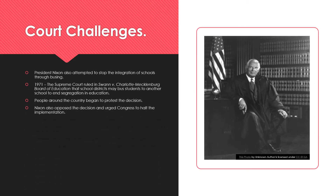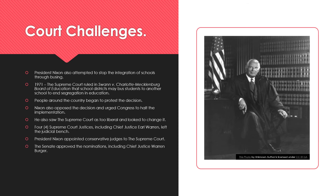President Nixon also attempted to stop the integration of schools through busing. Busing involved taking African American children from schools that were failing or not doing well and bringing them to other schools in other locations, both in Northern and Southern states. Nixon wanted to stop that. In 1971, the Supreme Court ruled in Swann v. Charlotte-Mecklenburg Board of Education that school districts may bus students to another school to end segregation in education. Many people were not happy with this and began to protest the decision. Nixon himself also opposed the decision and urged Congress to halt its implementation. He saw the Supreme Court as too liberal and looked to change it.